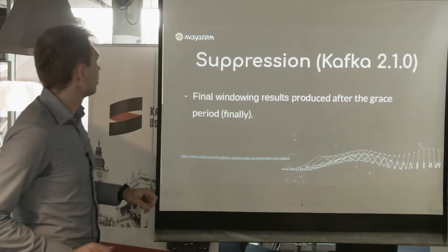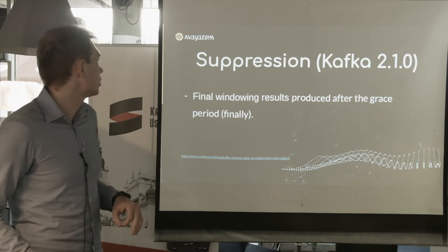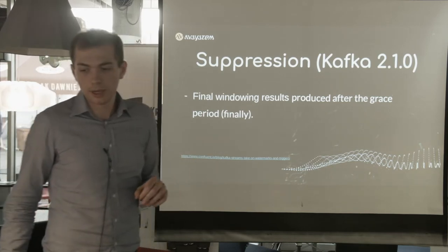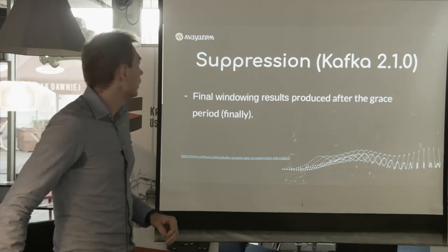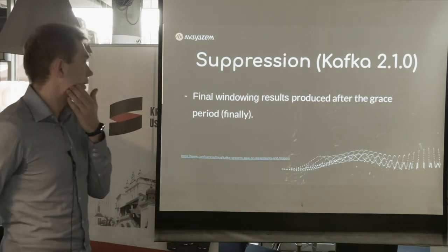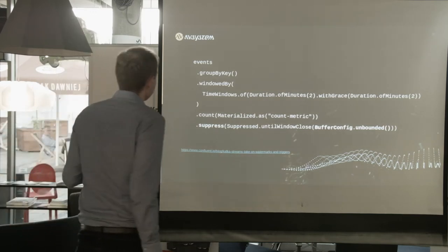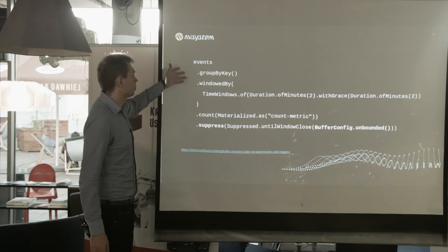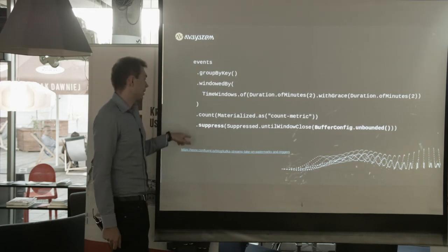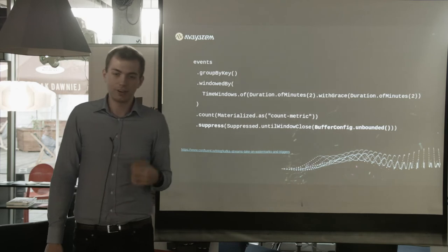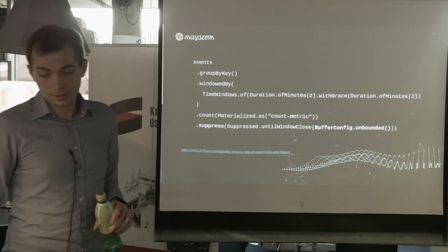Kafka 2.1.0 introduces the suppress operator, and finally we can produce results after the grace period. I think of this as a major feature. I have experience with Kafka Streams since version 1.0, and I think this is the biggest feature that came with Kafka in the last year. As you can see here, we have events grouped by key, then windowed — we define the window duration and grace period — then we count and suppress. So the result will be final, sent after the window has finished.